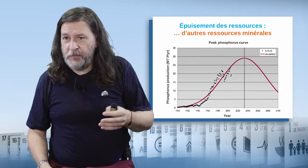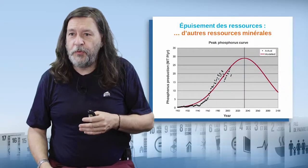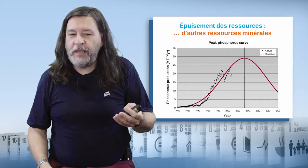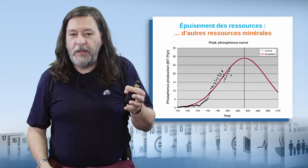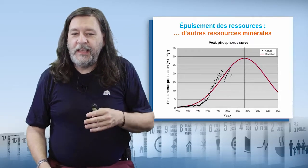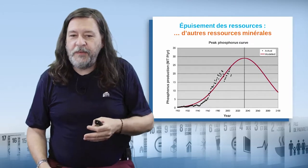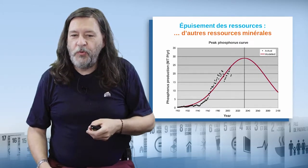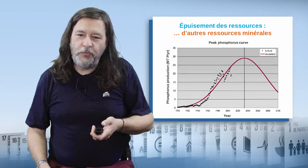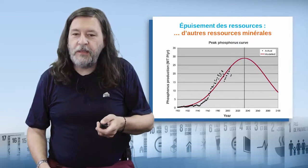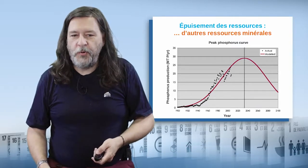There's not only oil, of course — there are also phosphates. Phosphates are involved in the production of fertilizer, and therefore in farming yields. It's extremely important to feed the world. A number of forecasts have been made, and phosphorus should be exhausted relatively soon.